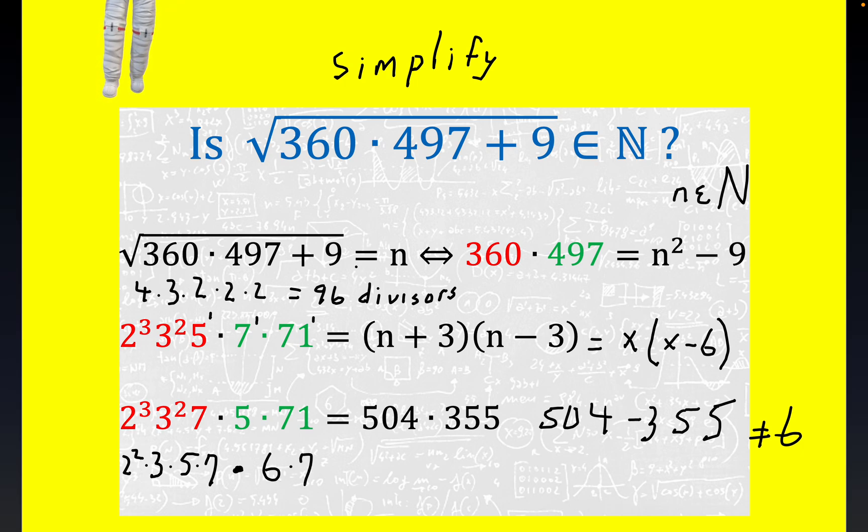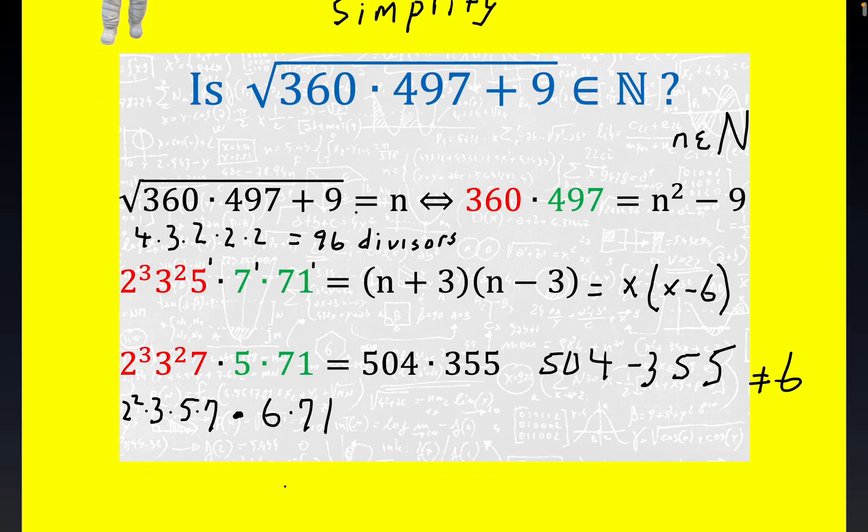rearranging the exponents in a fashion that's going to turn out favorable because this is equal to 420 times, what's this, 426? 426. But guess what? We have what we're looking for here, right, folks? So that would mean, that would mean, folks, that n + 3 would have to be this number.